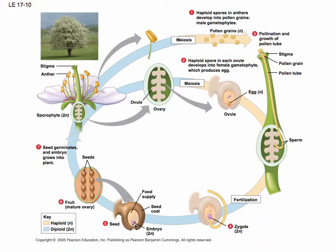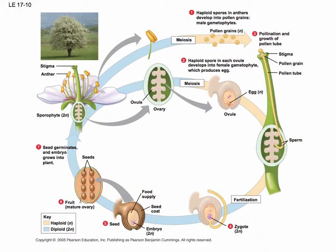The zygote develops into a diploid sporophyte — in this case, it's still a little embryo. If you ever cut open a bean seed, you might see that. It comes packaged with its own food supply, which is actually a kind of complicated tissue, and that whole thing is surrounded by a seed coat. You can think of the seed as a baby plant along with its food. The seeds develop in the ovary, and when the ovary is mature, that's what we call a fruit — here's a mature fruit with seeds on the inside.